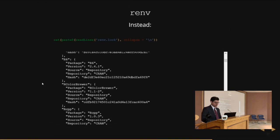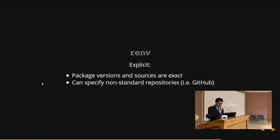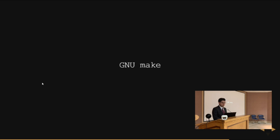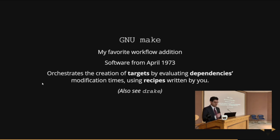renv is extremely powerful for reproducibility, which goes hand in hand with good project organization. Package versions and sources are explicit, and you can even specify non-standard repositories like GitHub. Now I want to talk about GNU make — this is in the title, the star of the show today. I just picked this tool up recently within the past few months and it's really changed the way I work. It's been around since 1973. What it does is orchestrate the creation of targets that you define.